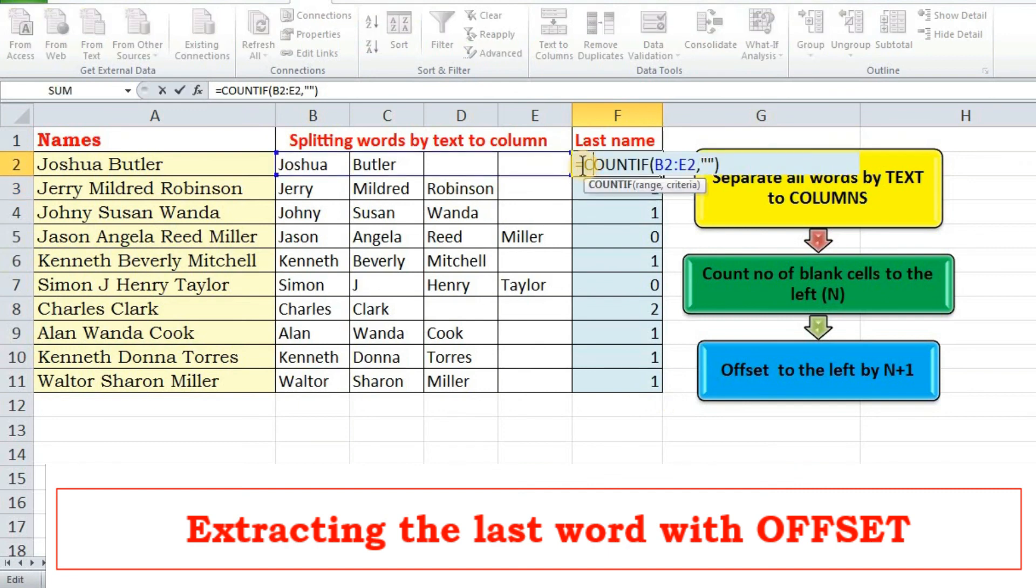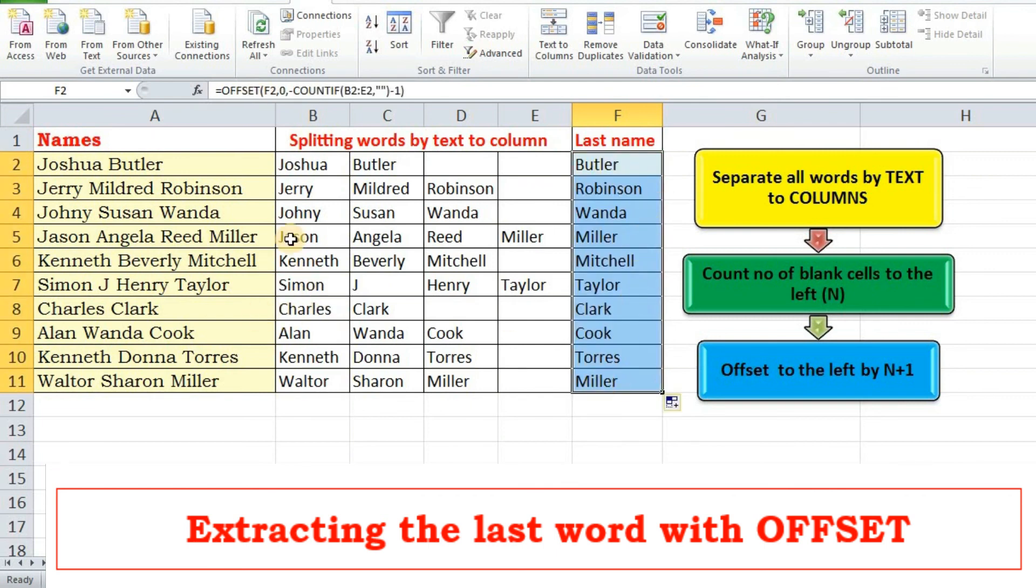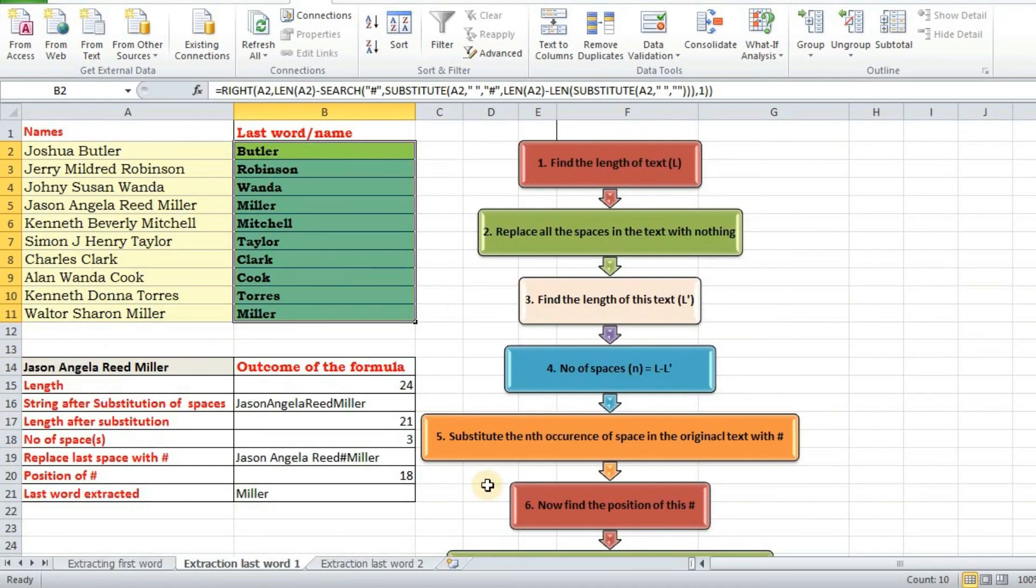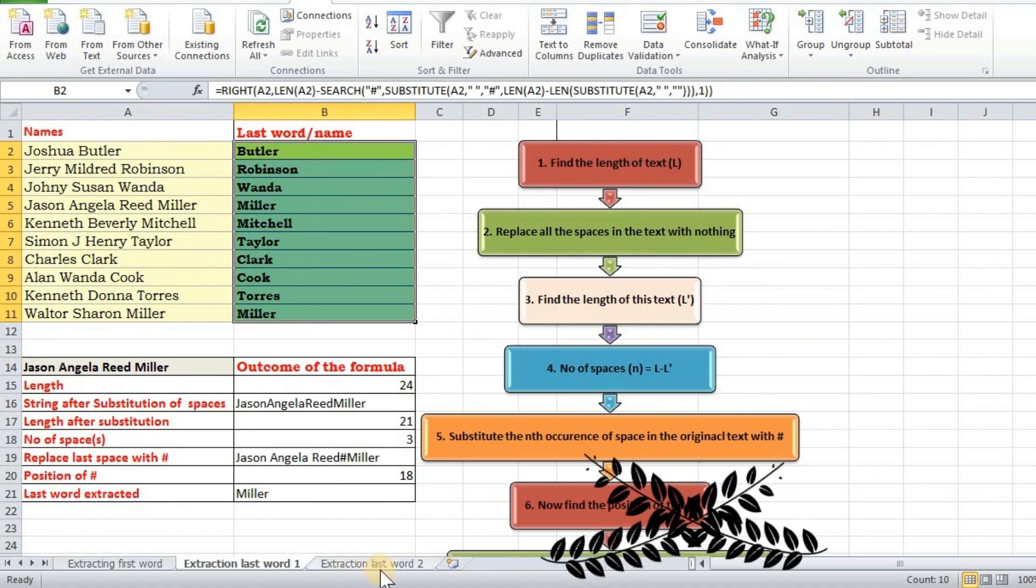So offset reference will be F2, rows to be offset and column will be 2 to the left so I am putting minus sign before countif and one more to the left. And now I am able to extract the last word. So if we are provided with a large list then this formula or this method is definitely better than the one I have explained here.